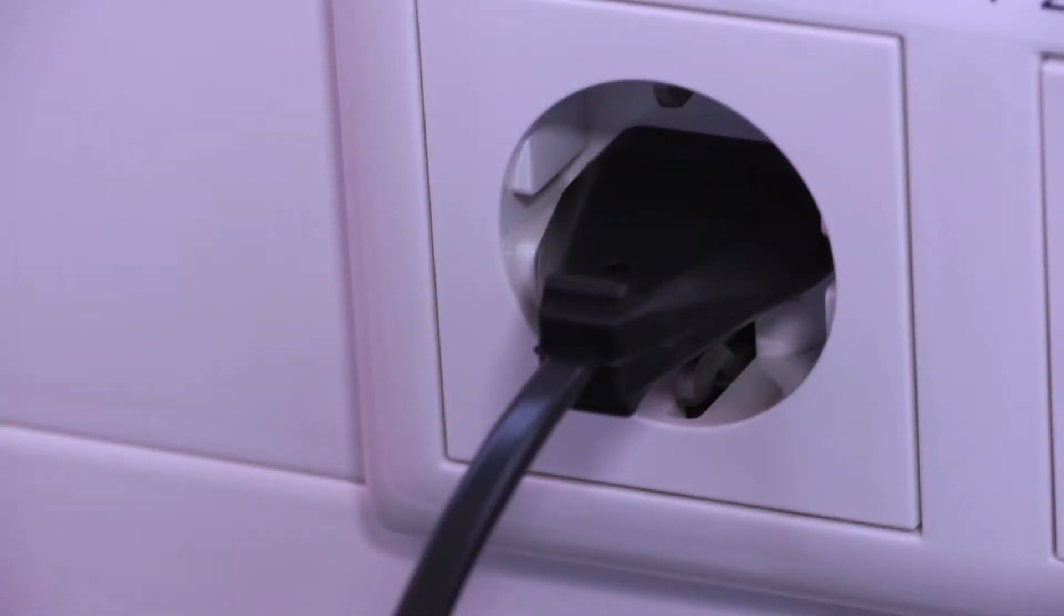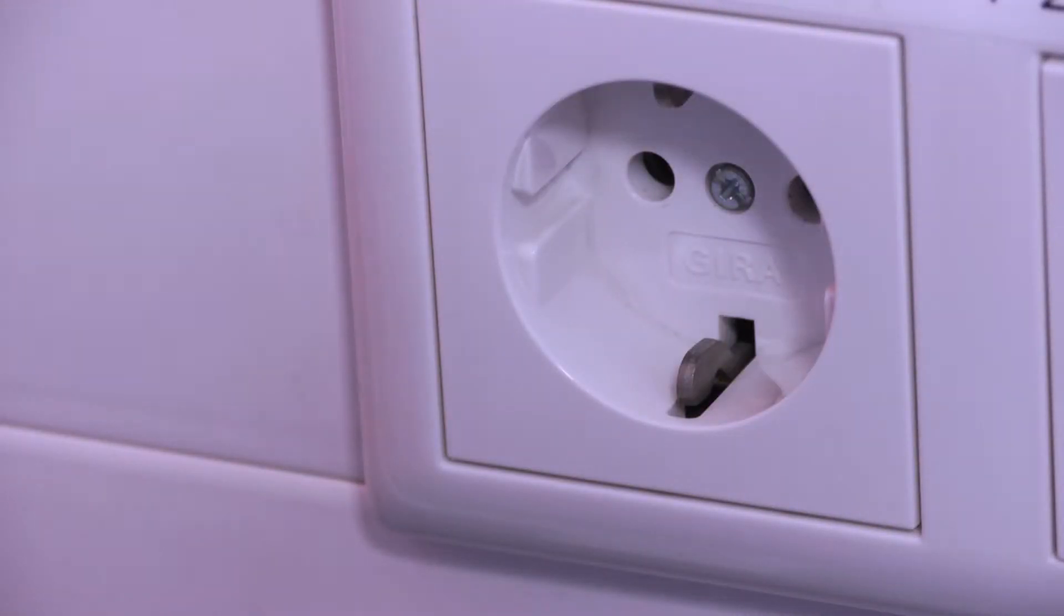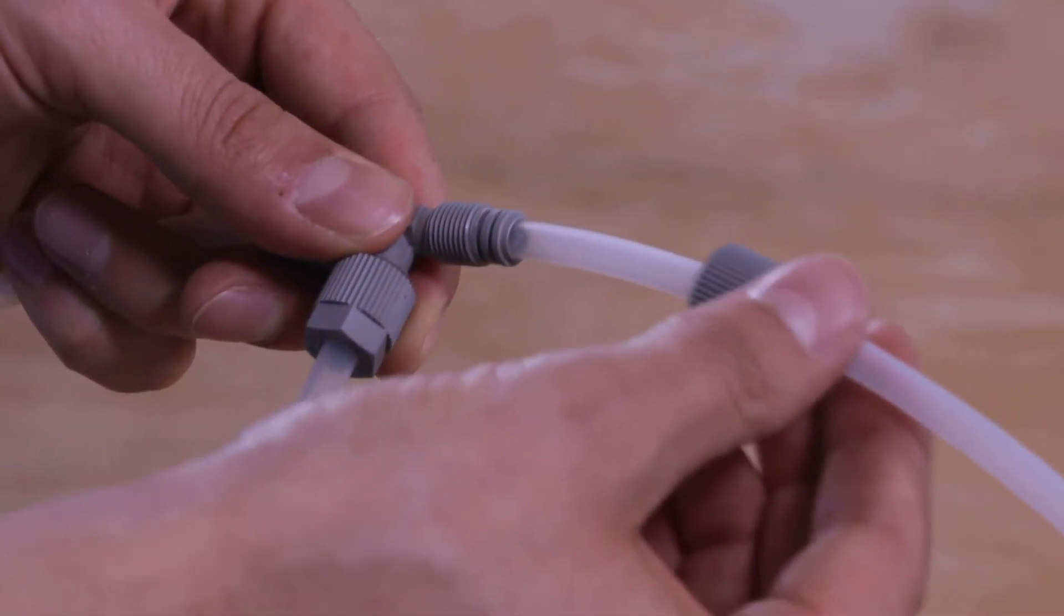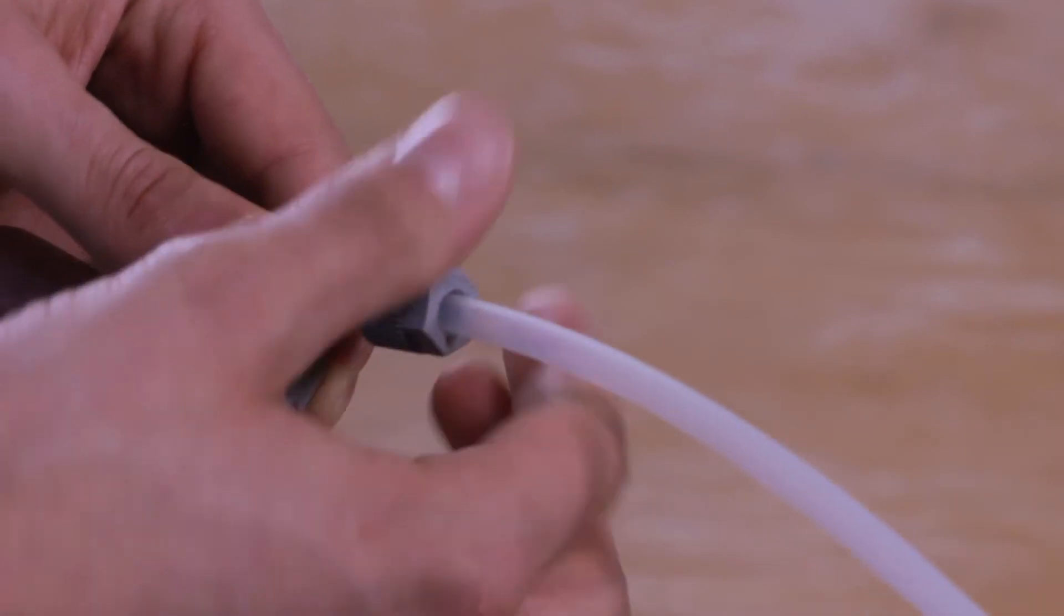Before you begin, make sure that the system is disconnected from the power supply. First, install another PE pressure hose between the compressor and the system in addition to the existing ones.